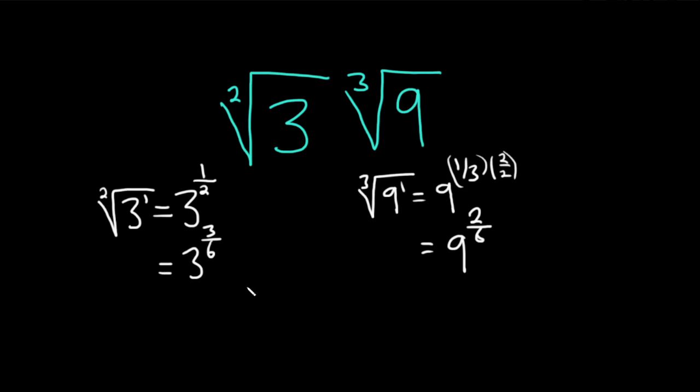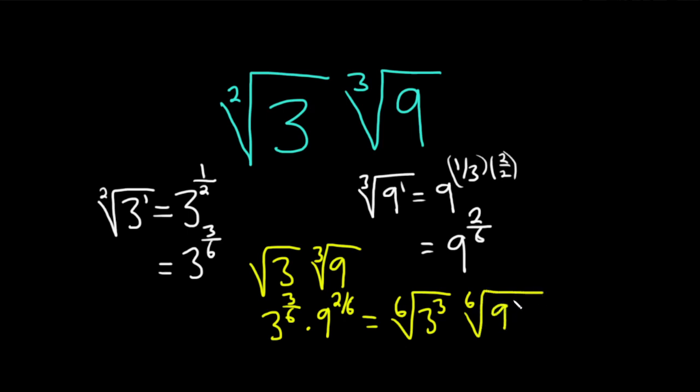Now we can combine what we have to do this problem. We have the square root of three times the cube root of nine. That's the same thing as three to the three over six times nine to the two over six. We can write this as the sixth root of three cubed times the sixth root of nine squared, because this six always goes on the outside.